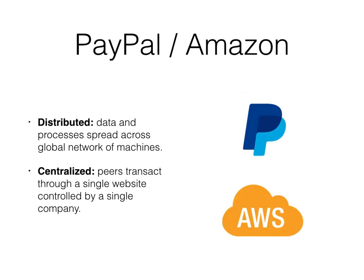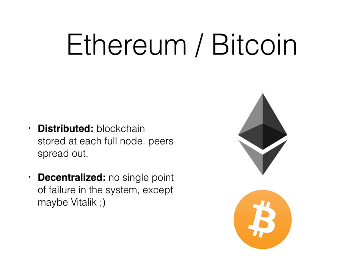PayPal and Amazon represent systems that are distributed in that they distribute data and processes over a global network of machines, but they're centralized in that peers have to transact through a single website controlled by a single company. Ethereum and Bitcoin are systems that are both distributed and decentralized — except maybe in the case of Vitalik being a single point of failure. Hopefully not.